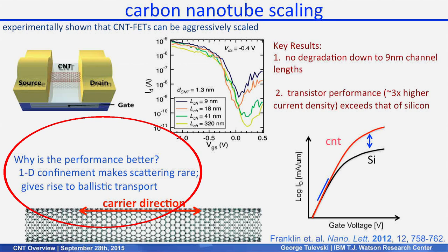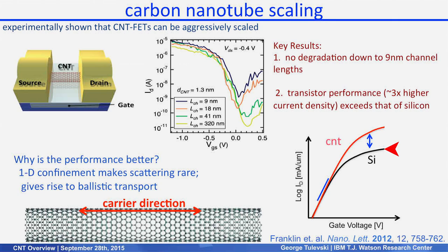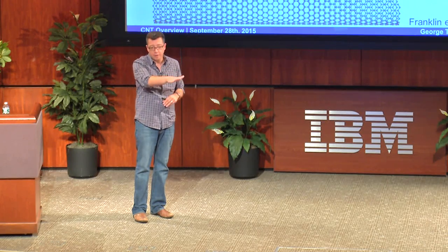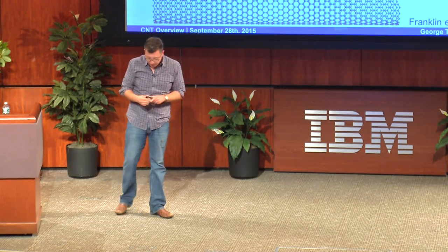Why is that? We have this one-dimensional wire, and performance in terms of current density is determined by how frequently electrons scatter when they move through a material. In a strictly 1D system, because electrons can only go left or right, scattering is very rare — especially at low voltages. This gives rise to what we call ballistic transport, where electrons get from one side to the other without scattering off any lattice atoms. In the IV curve, below the threshold region it's limited by thermodynamics and there's no difference, but above that the CNTs give higher currents at lower voltages than silicon.